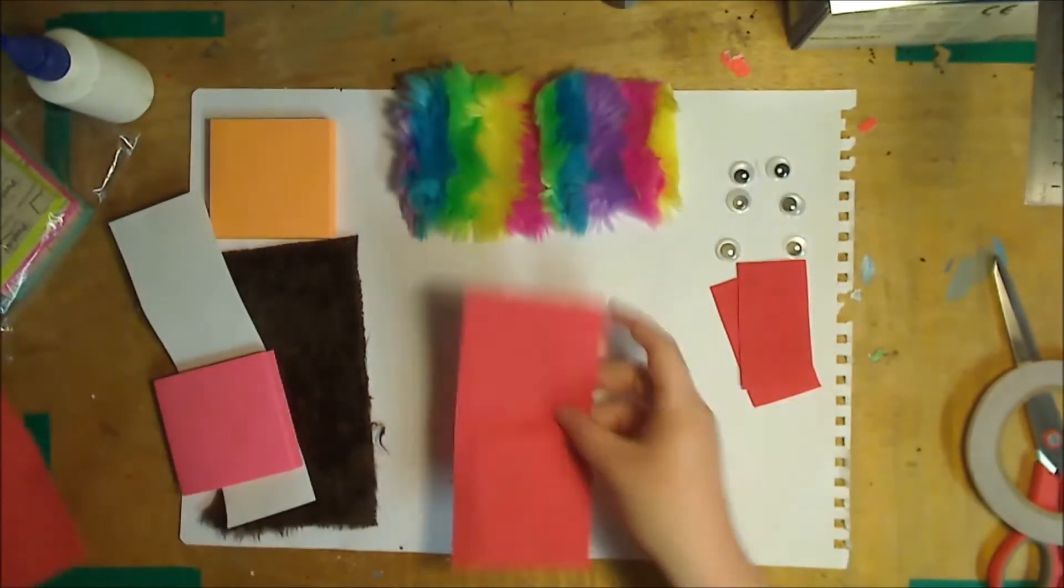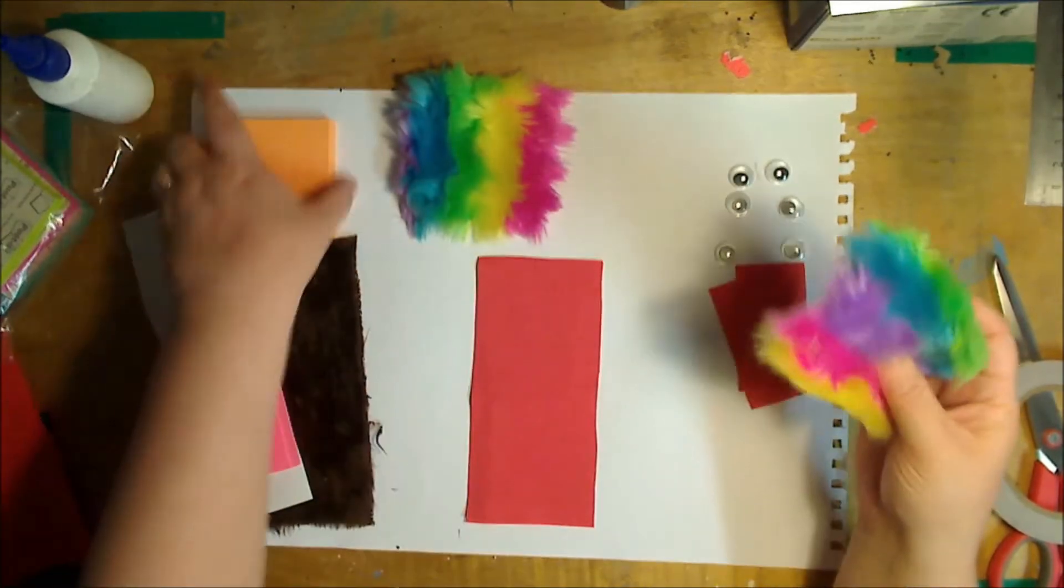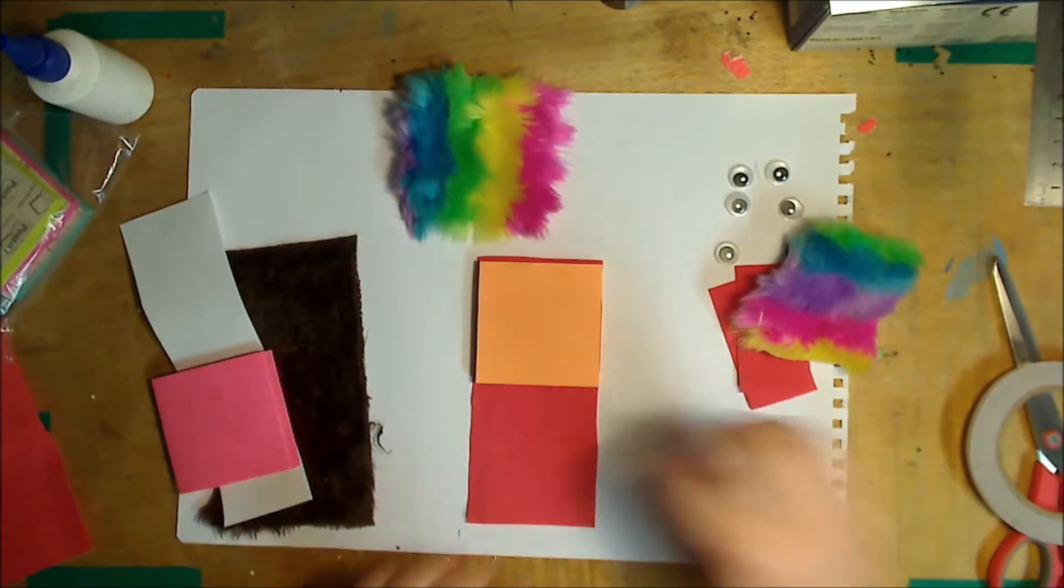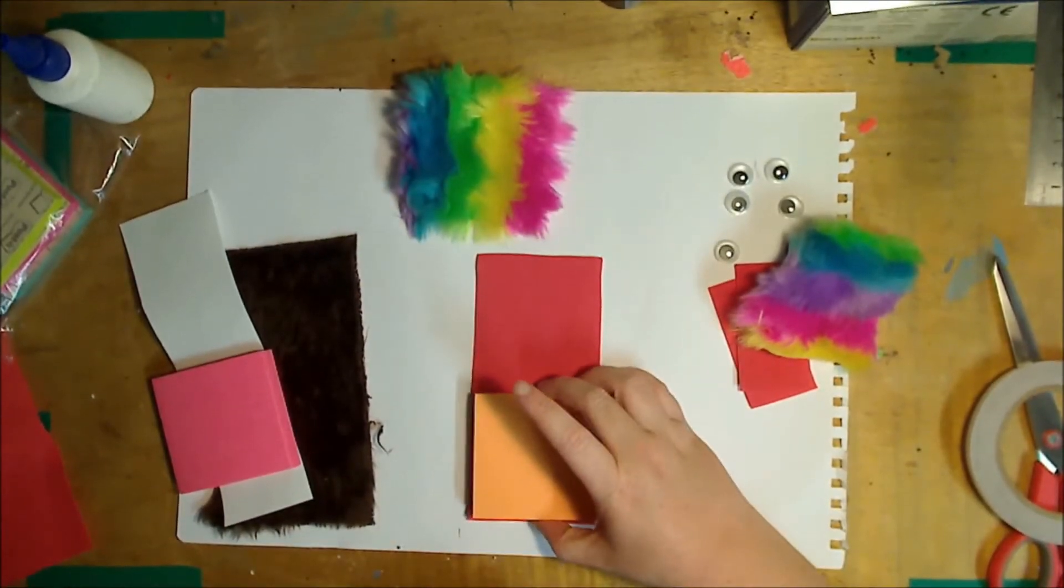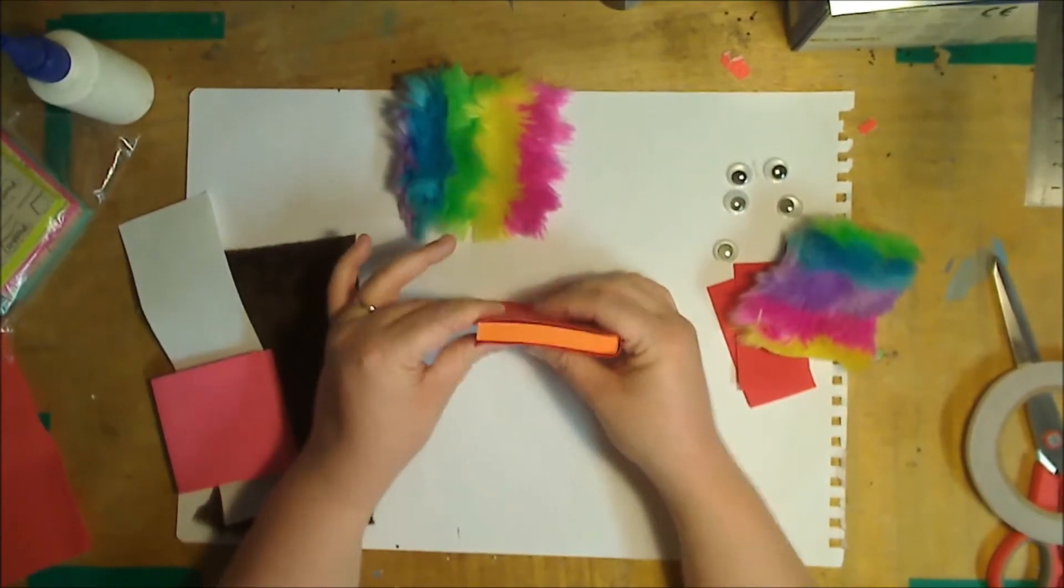So, step one, this is the lining foam so you need to measure your post-it notes whatever size you've got. Mine are eight by eight. So you just want it to be slightly bigger than your post-it notes.